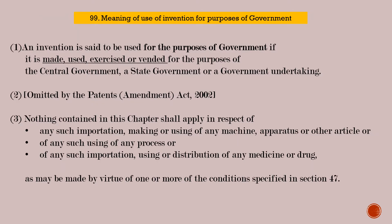Section 99: Meaning of Use of Invention for Purposes of Government. Subsection 1: An invention is said to be used for the purpose of government if it is made, used, exercised or vended for the purposes of central government or state government or government undertaking. That is, when any central government, state government, or government undertaking organization makes, uses, exercises, or vends any invention, then that will be said to be used for the purpose of government.